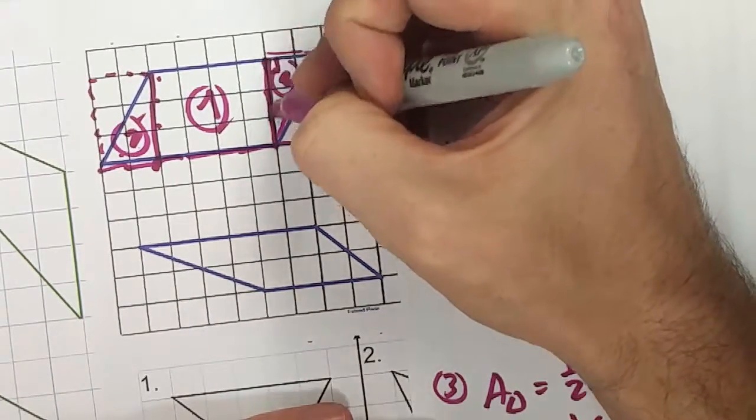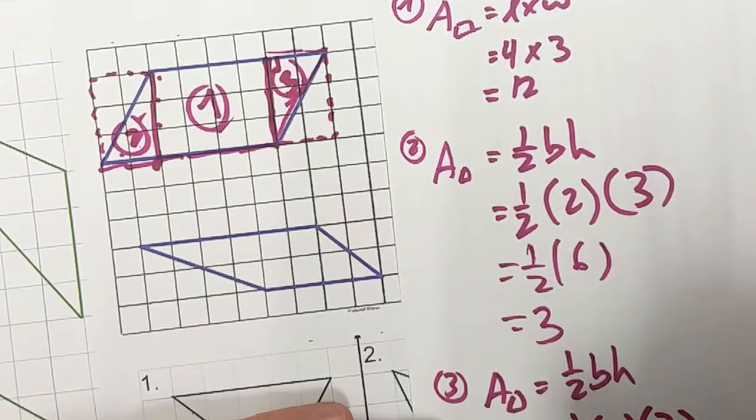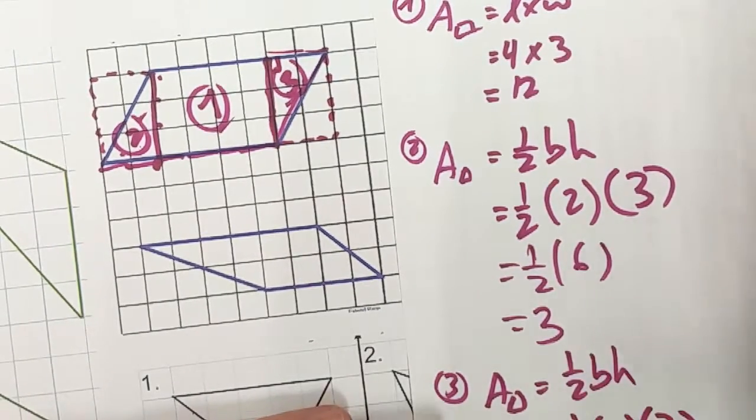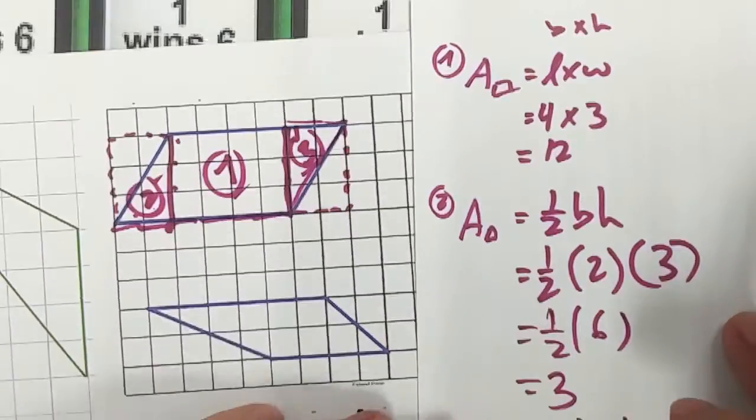Half of my base and height, the base of this one is two, and the height of my triangle is three. Multiply them all together I get half of six with a total of three.